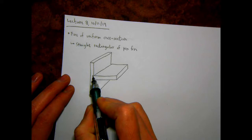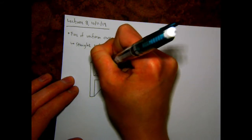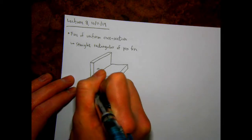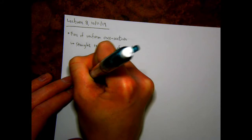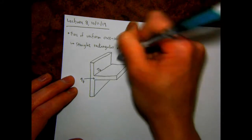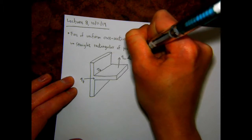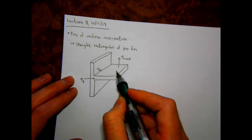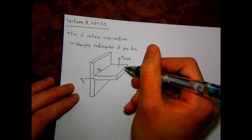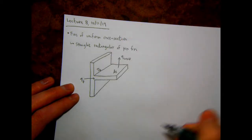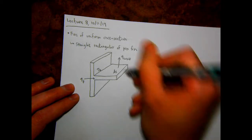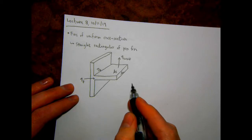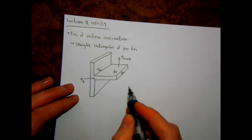We have our fin attached to a base. The temperature of the base we always call T_sub_B. There's a conduction heat transfer rate Q_sub_F going into the fin from the base, and convection heat transfer from the lateral sides of the fin. Q_convection represents convection from the entire surface area of the fin, not just the top. The surface area of the fin is A_sub_S — the entire exposed surface area — and the cross-sectional area is A_sub_C.